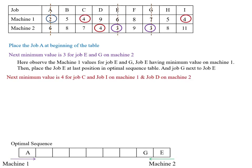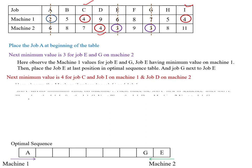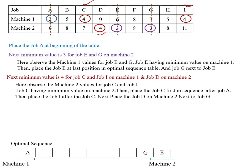Job G comes next. The next minimum value is 4 for job C and job I on machine one. Job C and job I both have a minimum value of 4 on machine one. Additionally, job D also has a minimum value of 4 on machine two. We observe the machine two values for job C and job I — job C has the minimum value on machine two. So place job C first in the sequence after A, then place job I after job C, and place job D on machine two after job G.